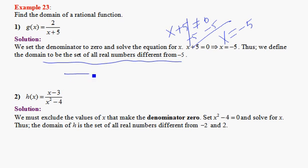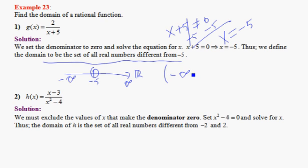We can also write the answer in interval notation. Looking at the real number line, we plot -5 and cut it off. Whatever is remaining is the domain, so the domain of this function is from negative infinity to -5, union from -5 to infinity.